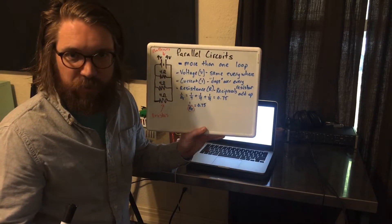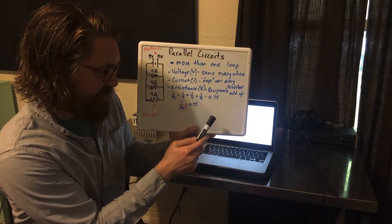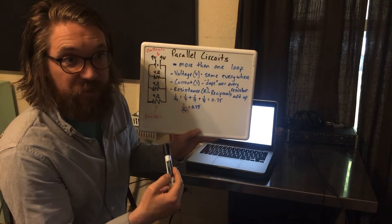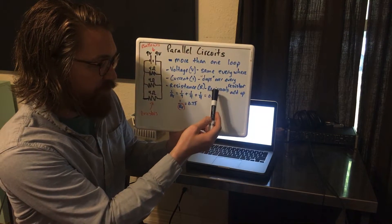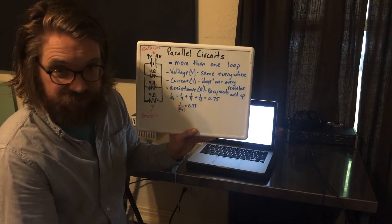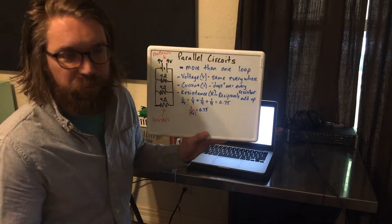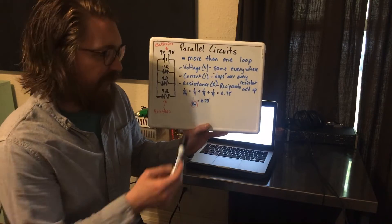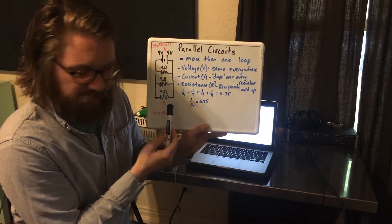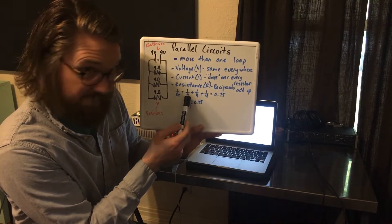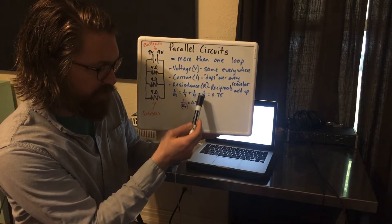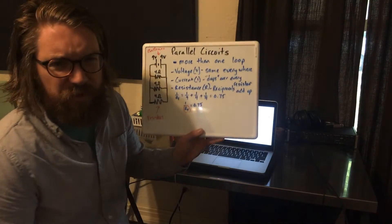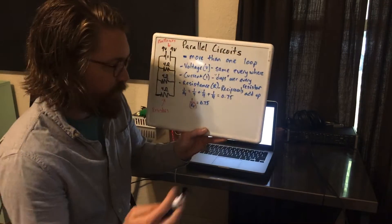The last and probably trickiest part about parallel circuits is how we add up resistance. In a parallel circuit, it's not just adding up the resistors — we add up the reciprocal of each resistor. A reciprocal is one divided by a number. So instead of R1 + R2 + R3, we add up 1/R1 + 1/R2 + 1/R3. Let's go through this math; it's not too tricky, but I want to make sure we've got it.